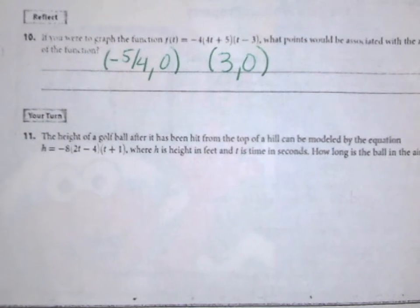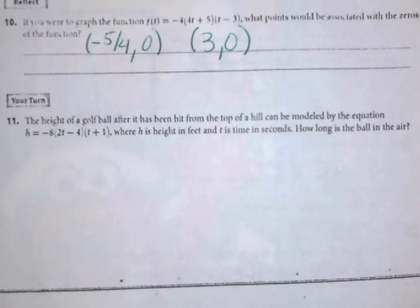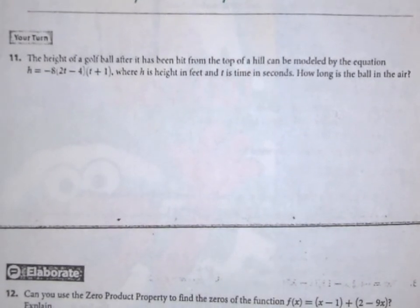Let's do another example. The height of a golf ball after it has been hit from the top of a hill can be modeled by the equation h = -8(2t - 4)(t + 1), where h is the height in feet and t is time in seconds. How long is the ball in the air?